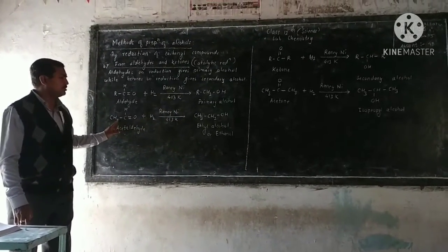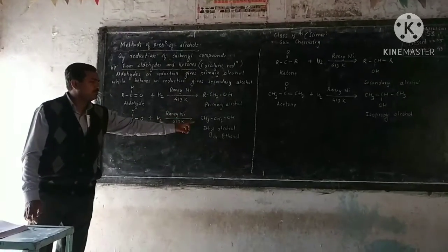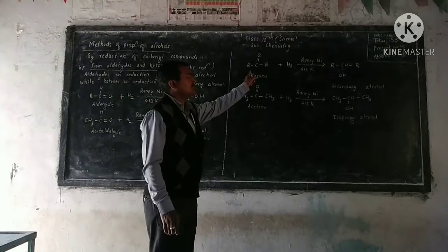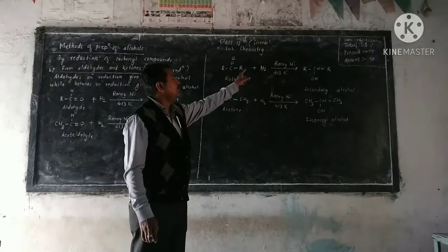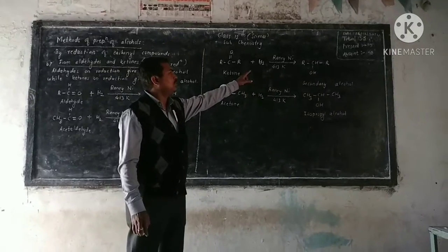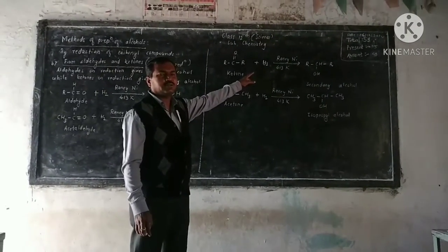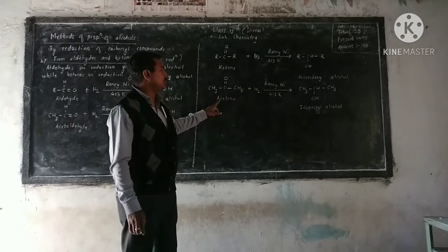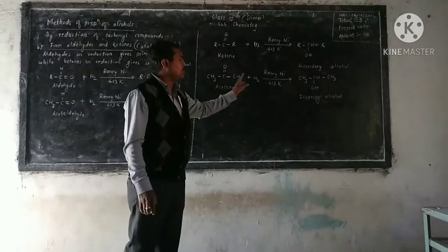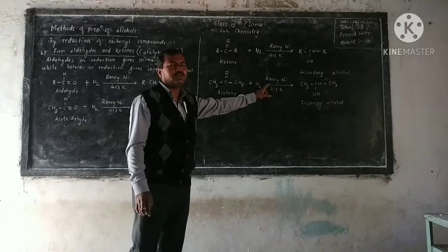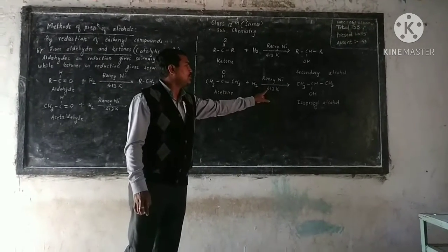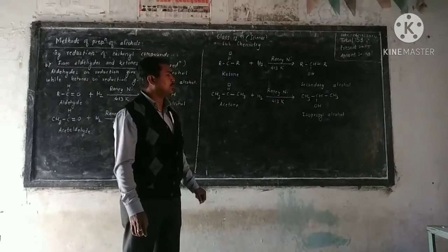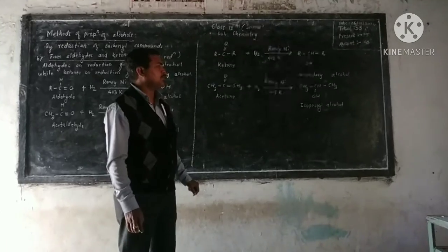Ketone on reduction in the presence of Raney Nickel at 413 Kelvin gives secondary alcohol. The example is acetone. Acetone on reduction in the presence of Raney Nickel at 413 Kelvin gives isopropyl alcohol, also called secondary propyl alcohol.